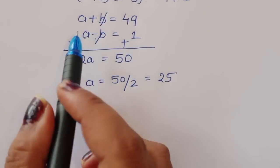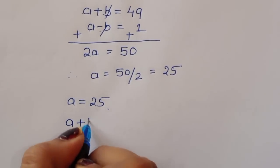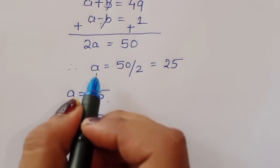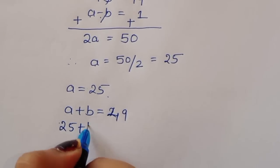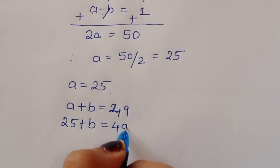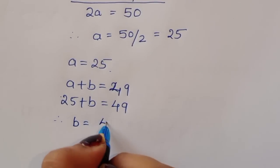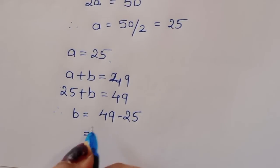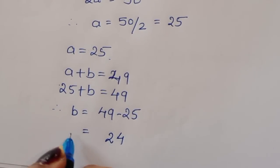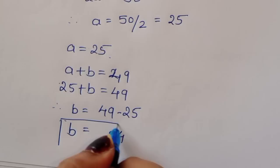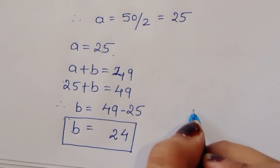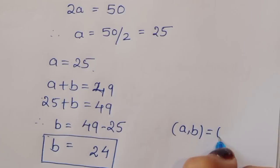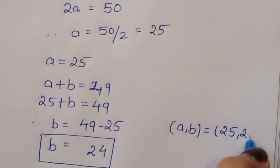Now finding b: since a plus b equals 49 and a equals 25, we get 25 plus b equals 49, therefore b equals 49 minus 25, which is 24. So in case 1, the value of a is 25 and b is 24.